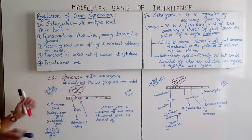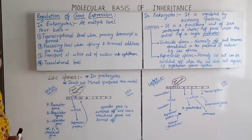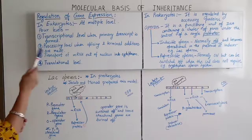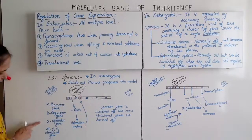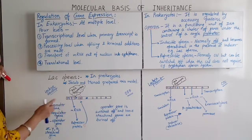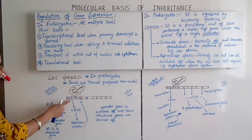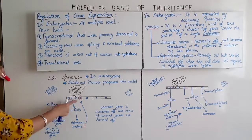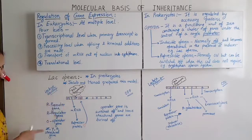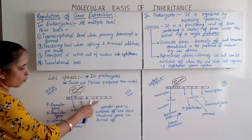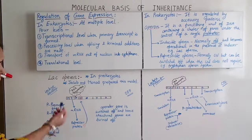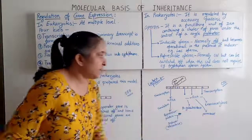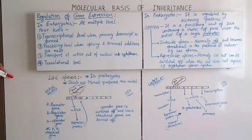Two scientists, Jacob and Monod, proposed the lac operon model. In the structure: P is the promoter gene, R is the regulator gene, O is the operator gene, and Z, Y, A are the three structural genes — which later produce beta-galactosidase, permease, and transacetylase enzymes respectively.